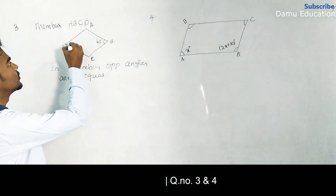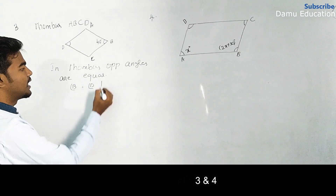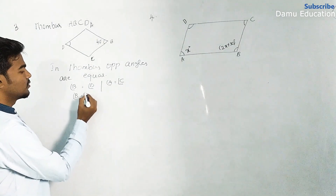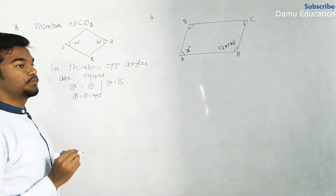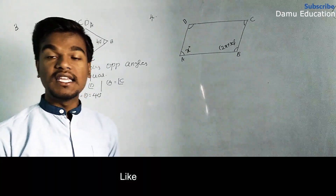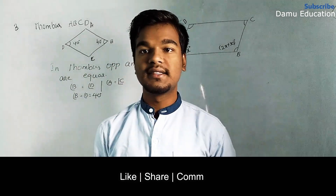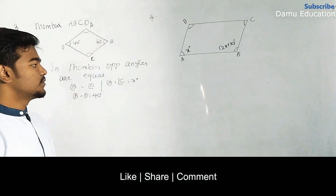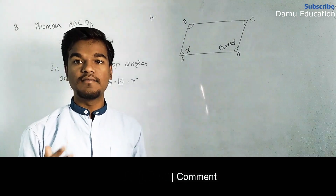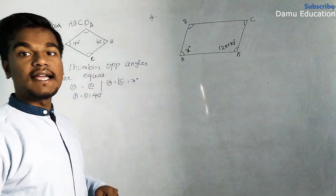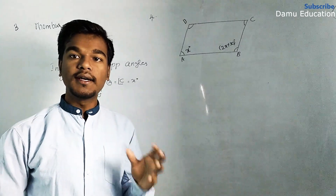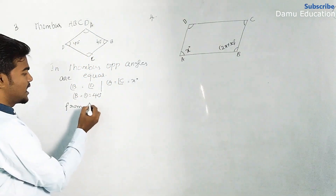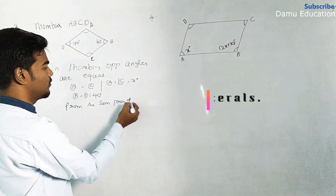Since opposite angles are equal, angle B equals angle D, and angle A equals angle C. Angle B is 40 degrees. To find angle A and angle C, let both be x degrees. We can find them using two methods: sum of adjacent angles in a quadrilateral equals 180 degrees, or the angle sum property of a quadrilateral giving 360 degrees.